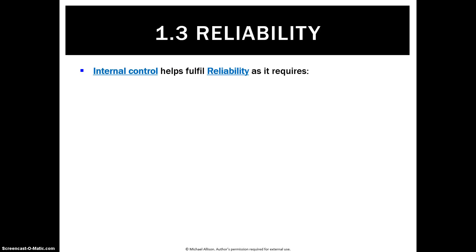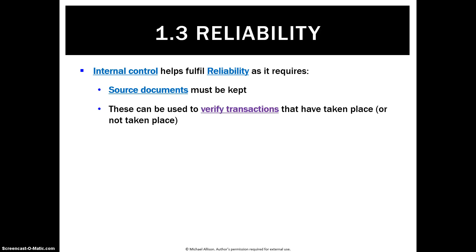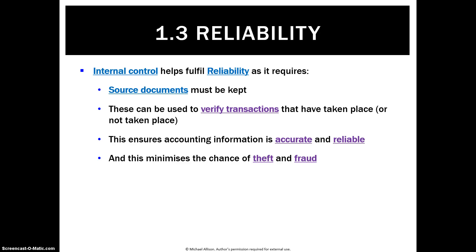So what does internal control have to do with reliability? It requires that you keep source documents. Source documents can then be used to verify that transactions have taken place — or just as importantly, have not taken place — and that ensures your information is accurate and reliable. Therefore, internal control is definitely required to make sure your financial records are reliable, as it minimizes the chance of any theft, fraud or misrepresentation.